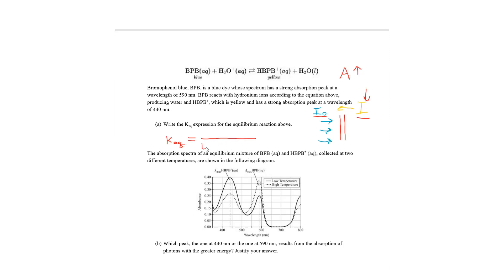So, we just write the aqueous species. I want to write the denominator first. So, the concentration of BPB times the concentration of hydronium, because it's with reactants. And then, on top, that is HBPB+. Note that you have to write the charge inside the brackets, because the charge is part of the chemical species. So, that's part A.